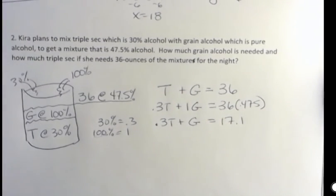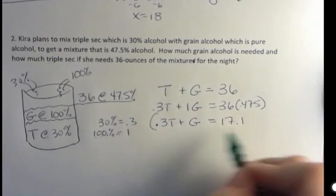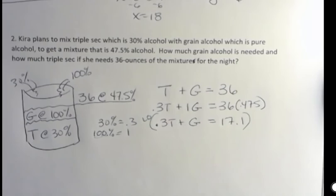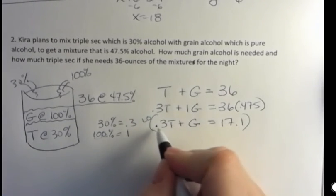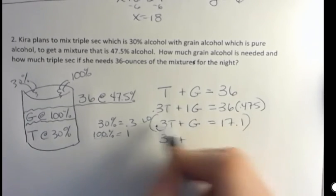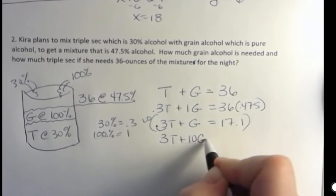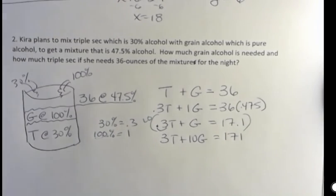Now I could solve that equation right now without getting rid of decimals, or I could multiply by decimals. I'm going to go ahead and multiply by 10 because I want to get rid of decimals. I like to do things with no decimals in them, but surely you've got a calculator. You can make that choice. Be careful here. This is 3T, this is 10G, and this is 171.